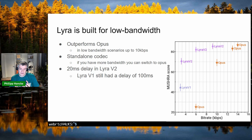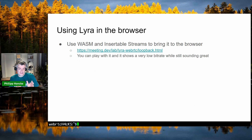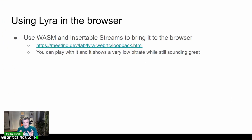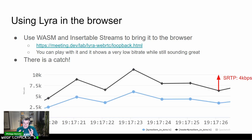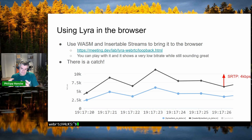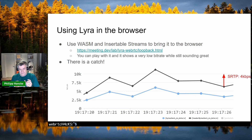A demo using WebAssembly and insertable streams brings Lyra to the browser — you can try it at meeting.dev lab Lyra WebRTC loopback HTML. It demonstrates very low bitrate use while still sounding great. However, there's a catch: looking at the statistics, the blue line showing payload bytes sent and the black line showing header bytes sent reveals we're sending roughly twice the amount of header information compared to actual payload. And that doesn't even include the SRTP overhead, which is another 4 kbps — so only about one third of the data is actual audio payload.